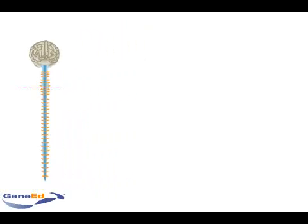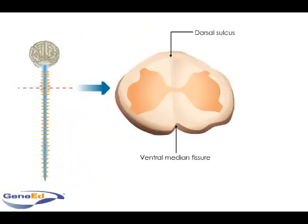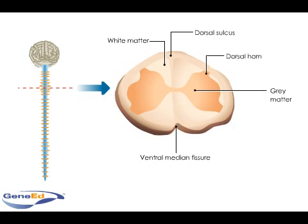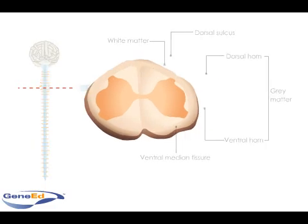The spinal cord has two layers consisting of white and gray matter. In cross-section, the gray matter resembles a butterfly with wings spread. Each wing has a dorsal — upper or toward the back — and ventral — lower or toward the belly — horn.